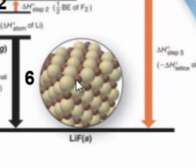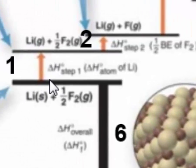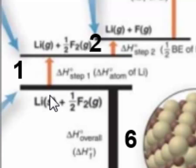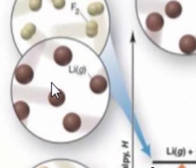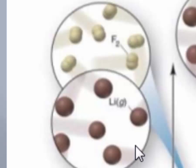Born and Haber analyzed this and realized that you could imagine this overall process was made up of individual steps. The first step depicted here shows a change within the chemical system in which you're going from lithium in the solid phase to lithium in the gas phase. After the first step, the chemical system has lithium atoms in the gas phase, while fluorine is still in the form of diatomic molecules.